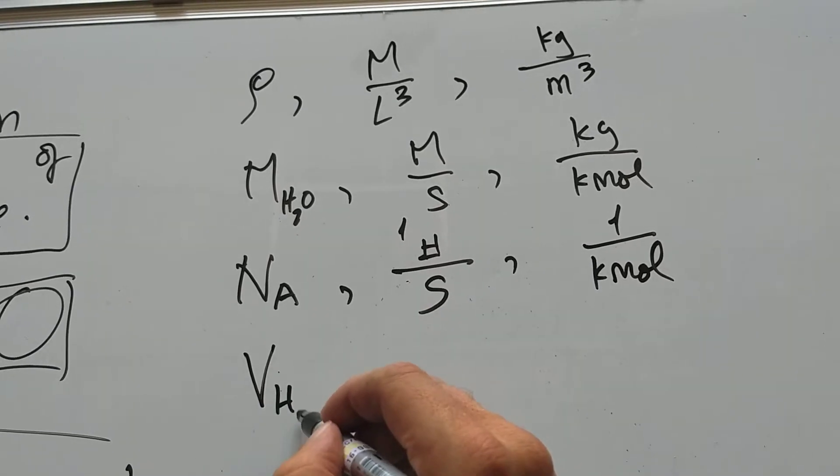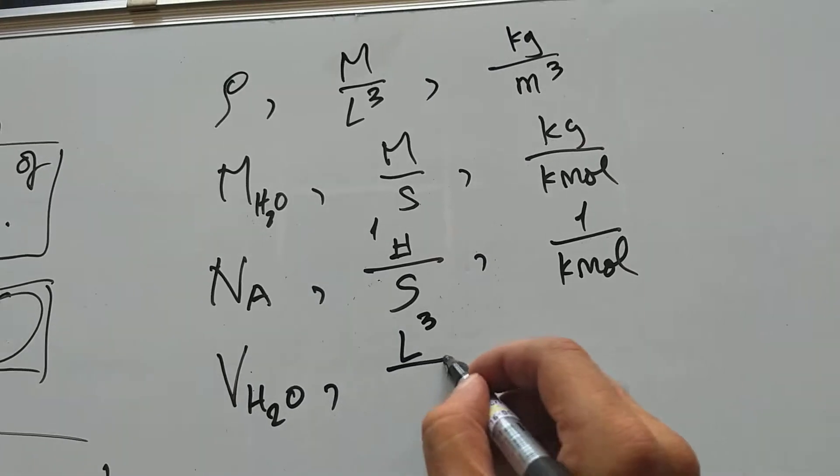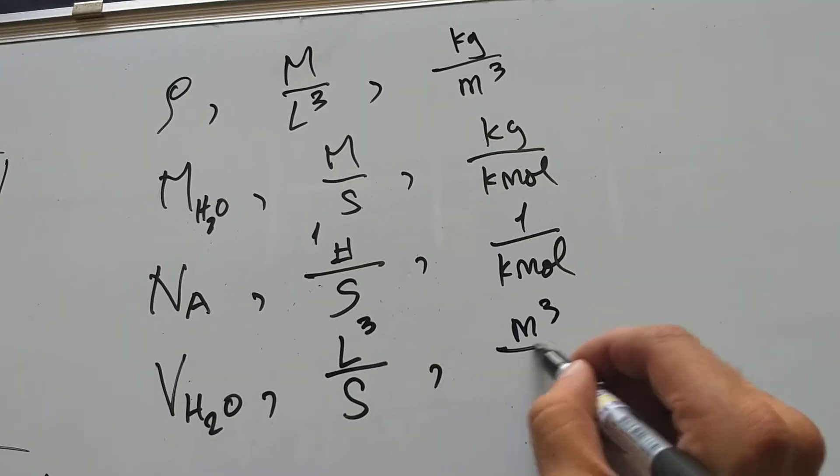Finally, volume, molar volume. That's volume divided by substance. And that's meters cubed per kilomole. We'll need all these quantities to do the job.